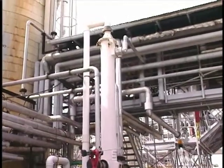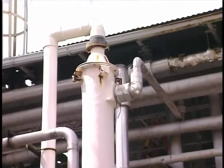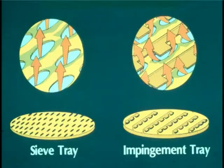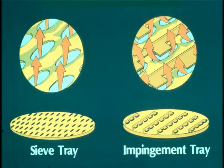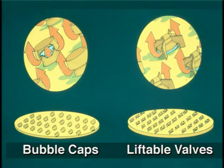The tray tower is a medium energy scrubber and consists of a vertical column with one or more trays mounted horizontally inside. The simplest tray is a perforated plate referred to as a sieve tray. Other tray designs include impingement trays that have small impingement targets above each perforation to enhance gas-liquid contact, bubble cap trays that can operate over a wide range of gas and liquid flow rates without adversely affecting collection efficiency, and valve trays that have liftable valves or caps that improve gas-liquid contact when the gas flow rate varies.